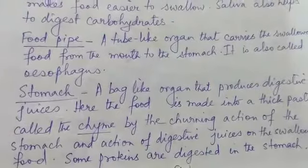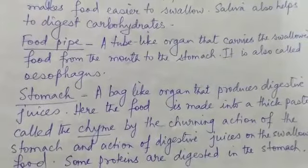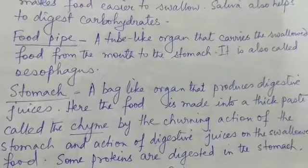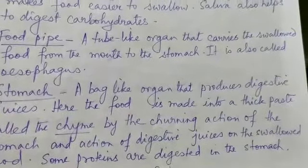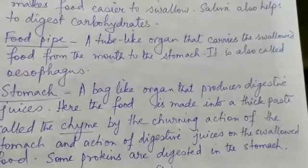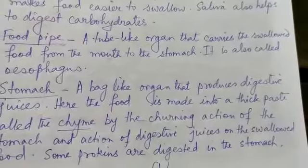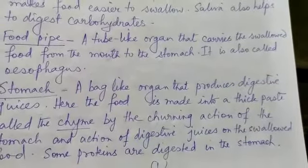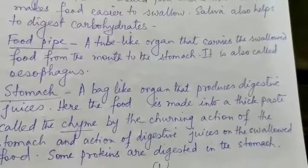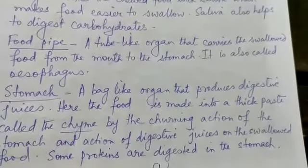Then the stomach: it is a bag-like organ that produces digestive juices. Here the food is made into a thick paste called chyme by the churning action of the stomach and the action of digestive juices on the swallowed food. Some proteins are digested in the stomach.